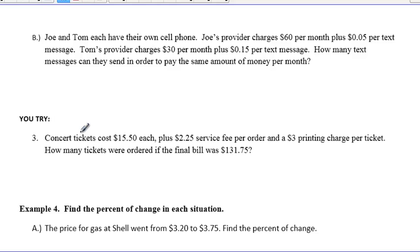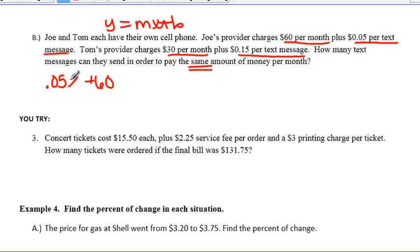Looking at example B, we have Joe and Tom have their own cell phone. Joe's provider charges $60 per month plus 5 cents per text message. Tom's provider, on the other hand, is $30 per month plus 15 cents per text message. How many text messages can they send in order to pay the same amount of money per month? So no matter what, Joe has to pay $60 per month. So we know that no matter what, it's going to be plus 60. Now, the thing that's going to vary or have the variable is going to be the 5 cents per text. So we're going to have 0.05 for the text. And we have to identify that x equals text messages.